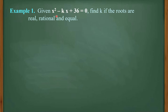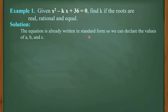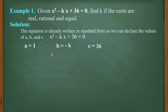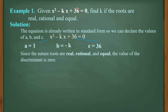Here are more examples. Example number 1: x squared minus kx plus 36 equals 0. Find k if the roots are real, rational, and equal. The equation is already in standard form, so we can declare the values: a is 1, b is negative k — although the value is unknown — and c is 36. Since the nature of roots is real, rational, and equal, we can say that the value of the discriminant is 0.